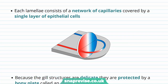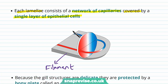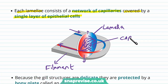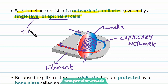Zooming in again, each lamella consists of a network of capillaries covered by a single layer of epithelial cells. We've got deoxygenated blood running towards capillaries, and as it reaches this point the capillaries are branching and forming a network over this area — this is the lamella, the protruding membrane sticking up from the filament. The capillaries then connect back up and take oxygenated blood to wherever it needs to go. Remember, capillaries are the site at which gas exchange occurs, and being covered by only a single layer of epithelial cells means it's a very thin diffusion pathway.